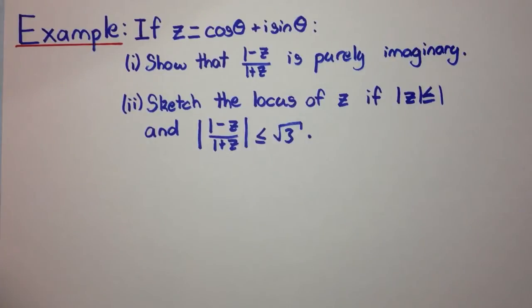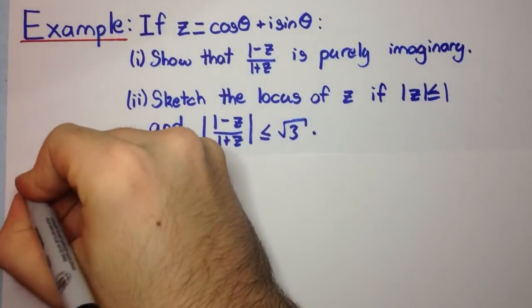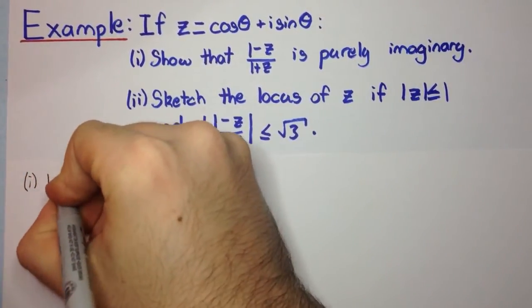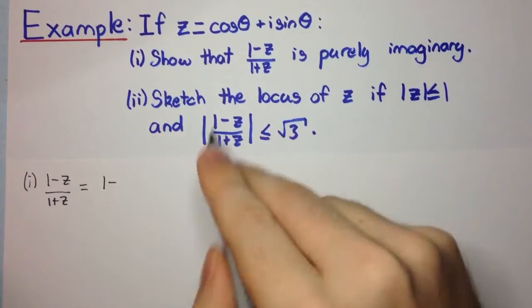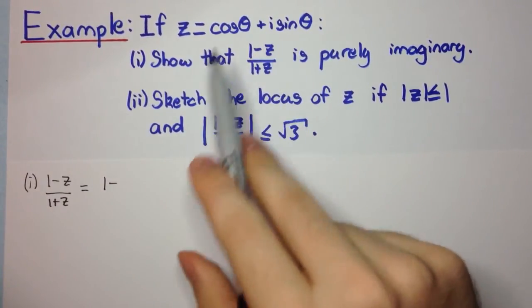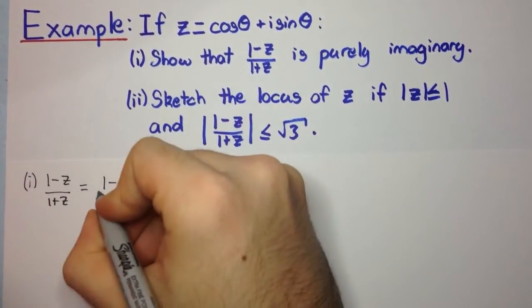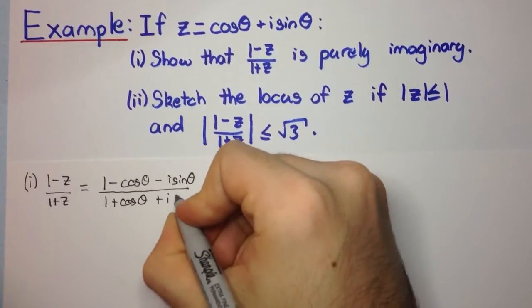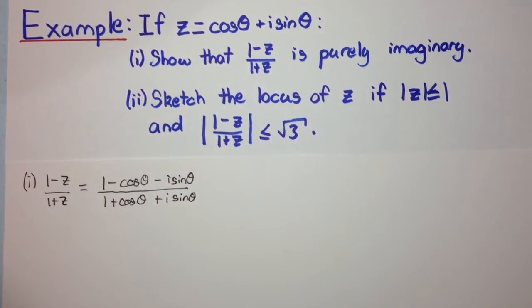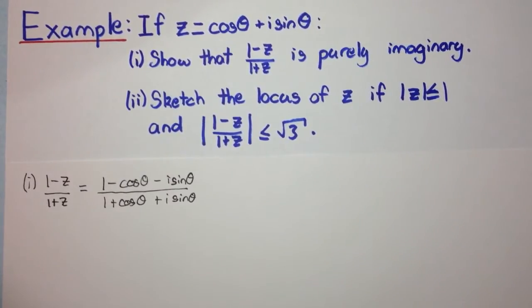So let's have a look at part 1 first. Part 1 is just a bit of algebra. We have (1 minus z) over (1 plus z), and substituting z = cosθ + i sinθ, this equals (1 minus cosθ minus i sinθ) all over (1 plus cosθ plus i sinθ). This is not very easy to simplify straight away, but we can manipulate it a little bit to make it easier.